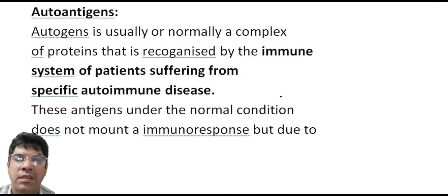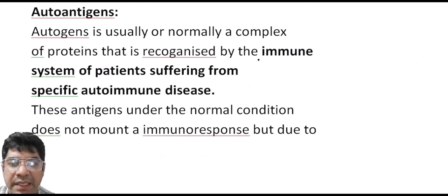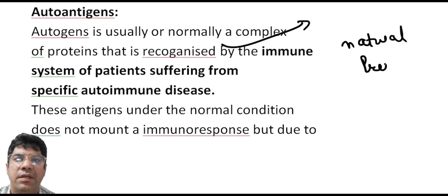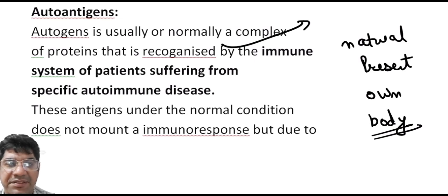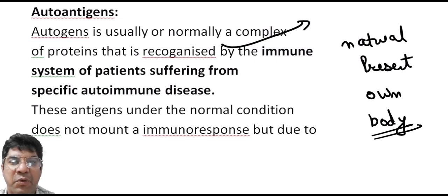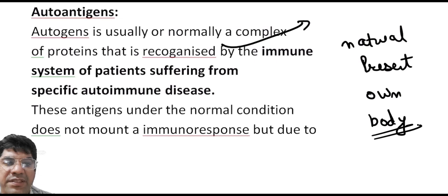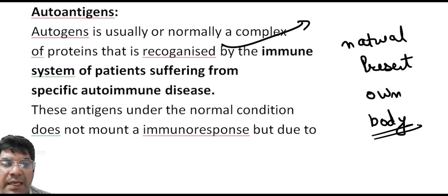Auto-antigens are a group of proteins or molecules naturally present in the body. Under normal circumstances, these self-antigens will not trigger an immune response because the immune system recognizes them as part of the body. In autoimmune disease, the immune system loses its ability to tolerate these self-antigens and mistakenly mounts an immune response against them, resulting in the body attacking its own tissues and organs, causing the characteristic symptoms and damage seen in autoimmune disease.